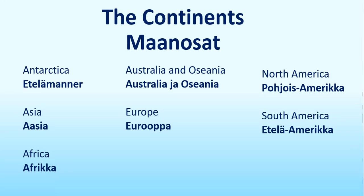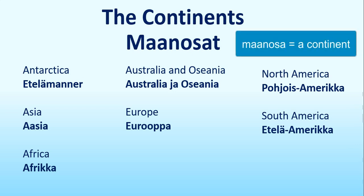Well done, that was it — 20 countries, nationalities, languages and capitals. And here is the summary of the Finnish terms for the continents. Maan-osat. A continent would be maan-osa and continents maan-osat. Let's read these together.